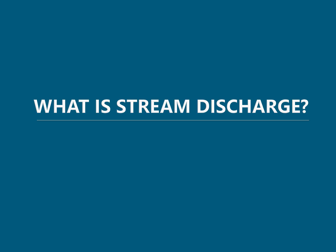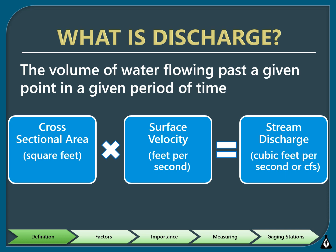Now let's define stream discharge. Discharge, also referred to as flow, is the measure of how much water is flowing in a stream at a particular point in time. Discharge is a product of a cross-sectional area and velocity. It is expressed in cubic feet per second, or CFS. Later in this chapter, we will cover how to calculate each step in finding stream discharge.